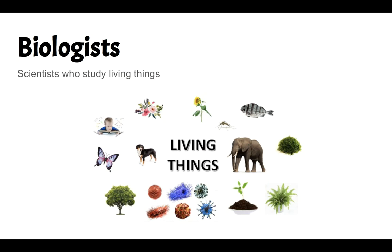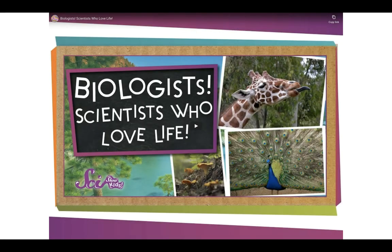Biologists are scientists who study living things. We are going to act as biologists in this unit and study different living things around the world. Living things are anything that needs air, water, or food to survive. In this picture, you can see different living things. We also start each unit with what we call a big question. Our big question inside of this unit is: how are organisms the same and how are they different? Organisms are just another word for living things. So first, I want to watch a video about a biologist and learn some different information about it.